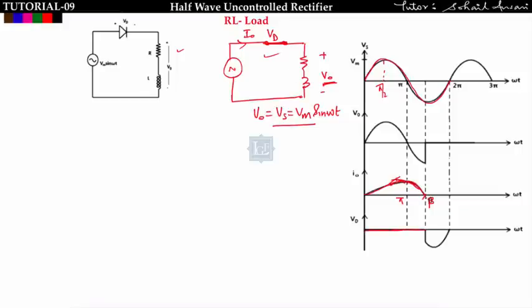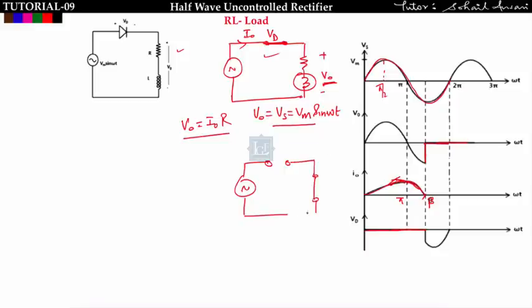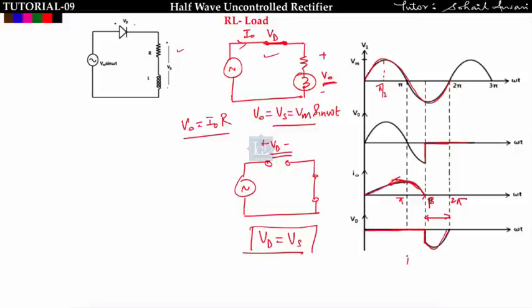After beta, the current becomes zero, so the output voltage is zero because V0 = i0 × R (the average voltage across the inductor is zero). Since i0 is zero after beta, the output voltage will be zero and the diode won't conduct. At this time the diode will be open circuited, and since output voltage is zero the output is short circuited. After beta, the voltage across the diode equals the supply voltage.